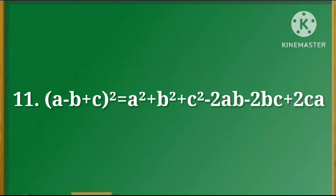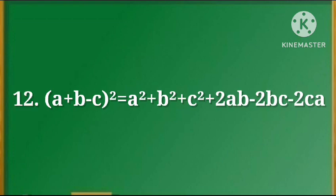11. (a plus b plus c) whole square is equal to a square plus b square plus 2ab plus 2bc plus 2ca.